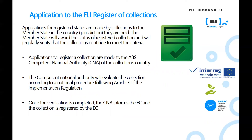Applications for registered status are made by collections to the member state in the country that is the jurisdiction in which they are held. The member state will award the status of registered collection and will regularly verify that the collections continue to meet the criteria. Applications to register a collection are made to the ABS competent national authority. The competent national authority will then evaluate the collection according to a national procedure following Article 3 of the ABS implementation regulation. Once verification is completed, the competent national authority will notify the EU Commission of the name and details of the collection, its holder, and the type of collection concerned, after which the Commission will include the received information in the register.